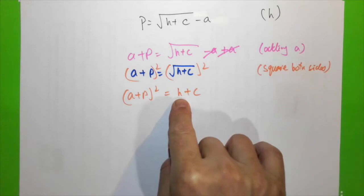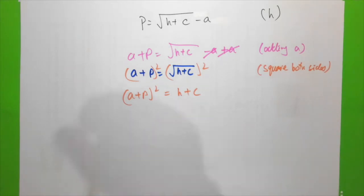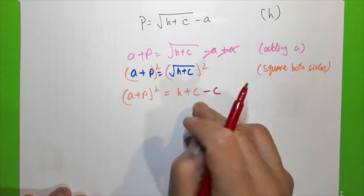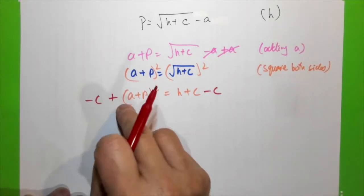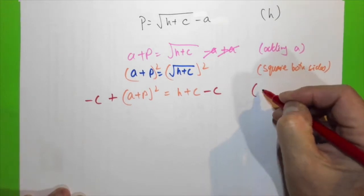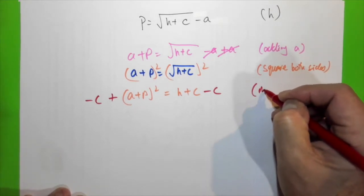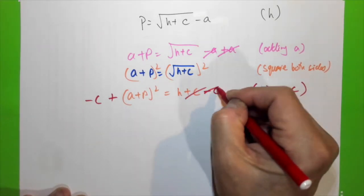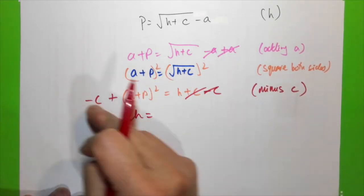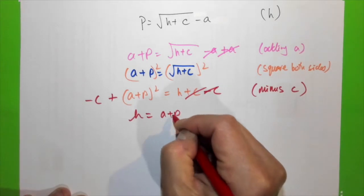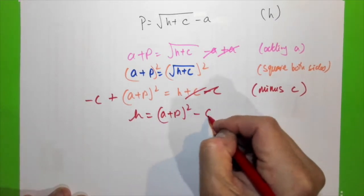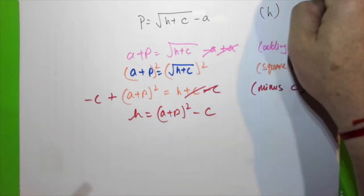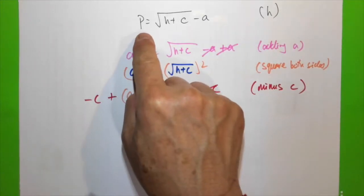Because we want h to be the subject, we subtract c from both sides — subtracting c gives zero on the right, and rewriting the equation: h = (a + P)² − c. That's four steps to change the subject from P to h.